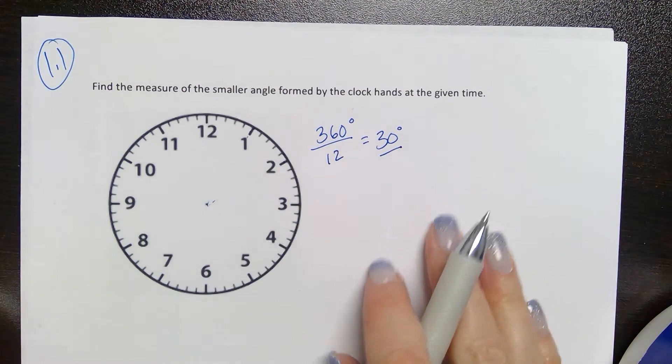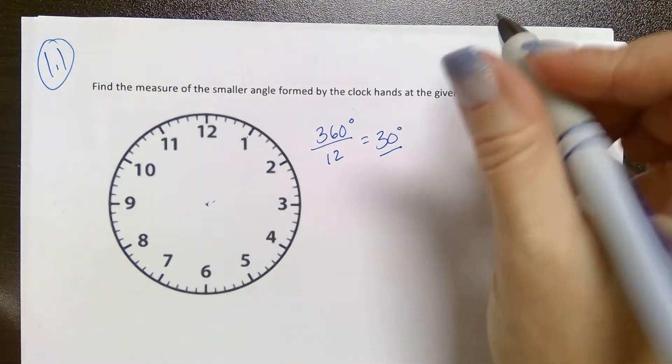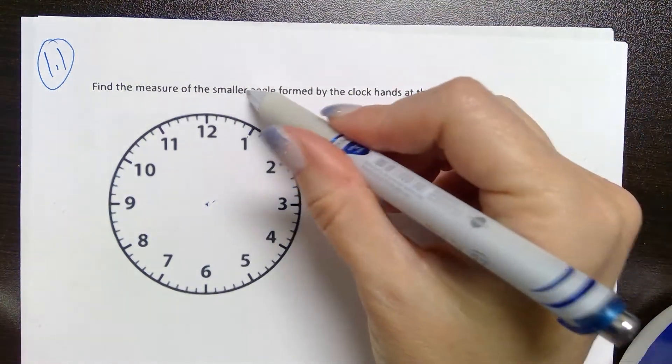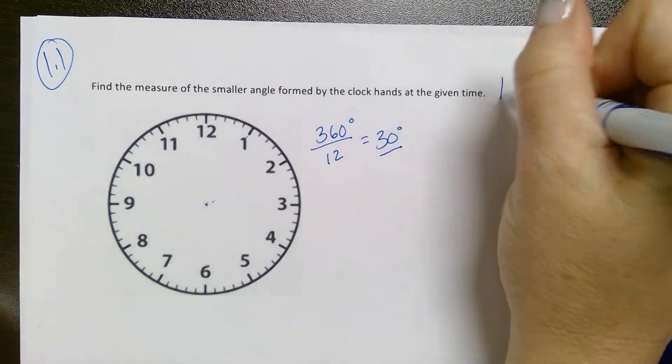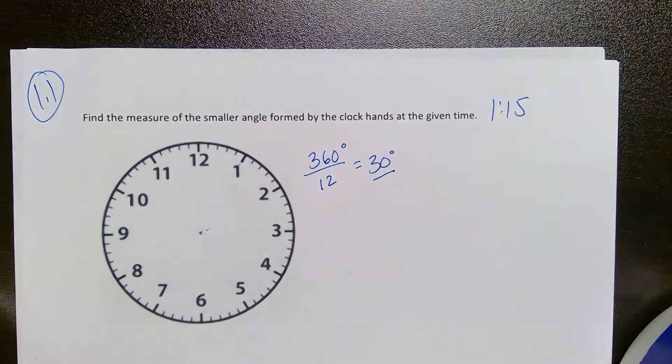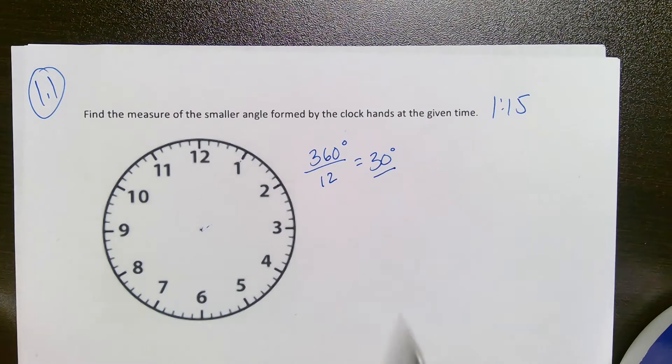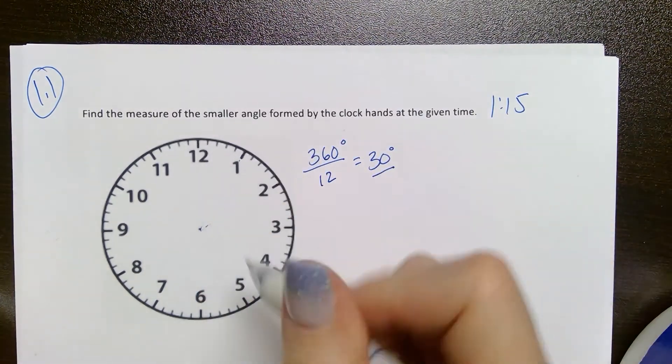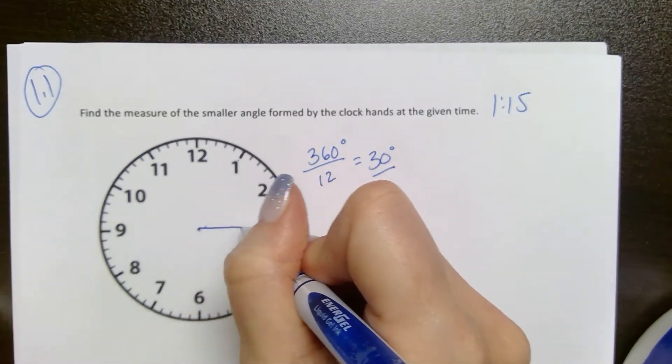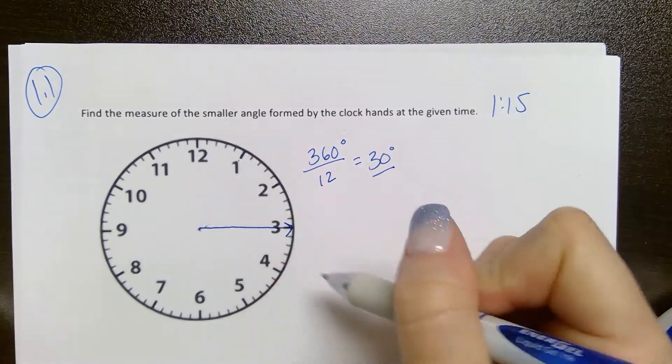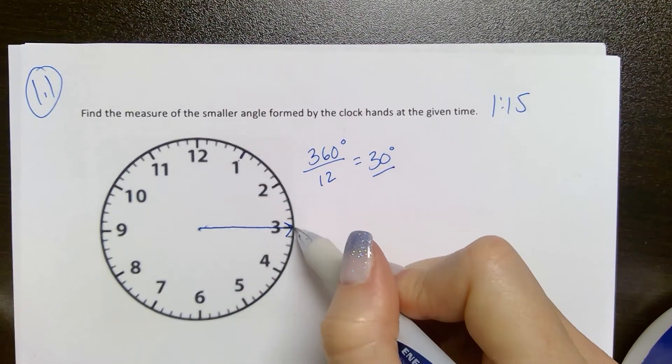Let's take a time. For example, let's say it wants to know the smaller angle formed by the clock hands at 1:15. At 1:15, my minute hand is pointing at the 3. The minute hand is the longer of the two hands and it's pointing directly at the 3.